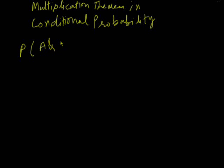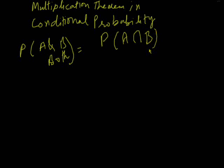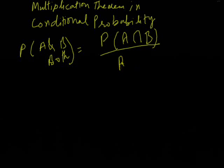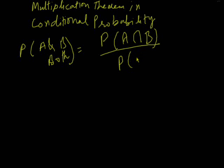Probability of happening A and B both divided by probability of conditions. Suppose if a condition of happening event A, we will write A, otherwise we will write B.